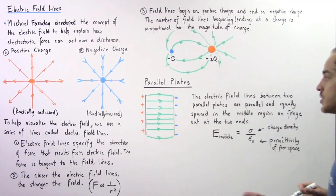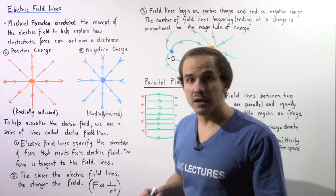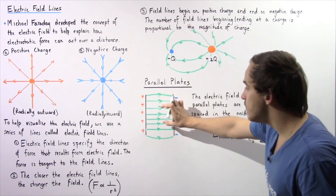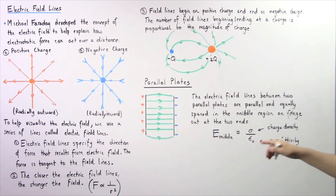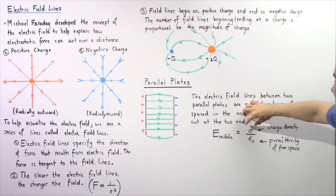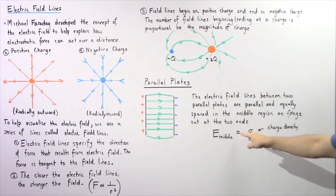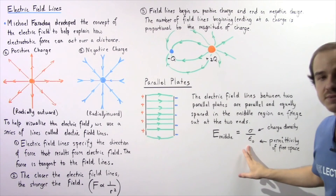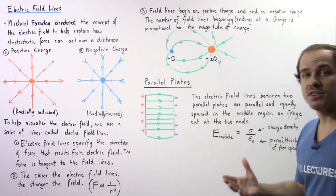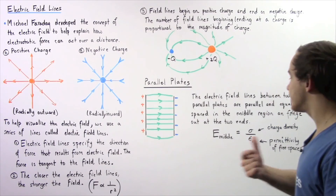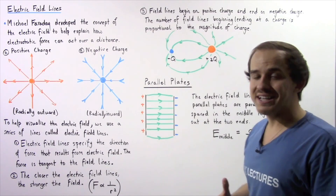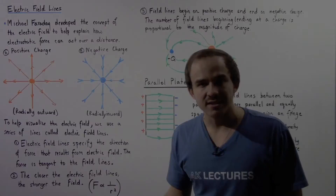The equation for the electric field between two parallel plates in the middle section is E = σ / ε₀, where σ is the charge density — a constant — and ε₀ is the permittivity of free space, also a constant.